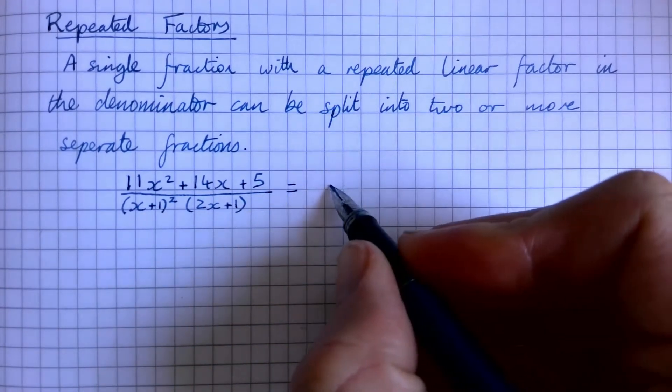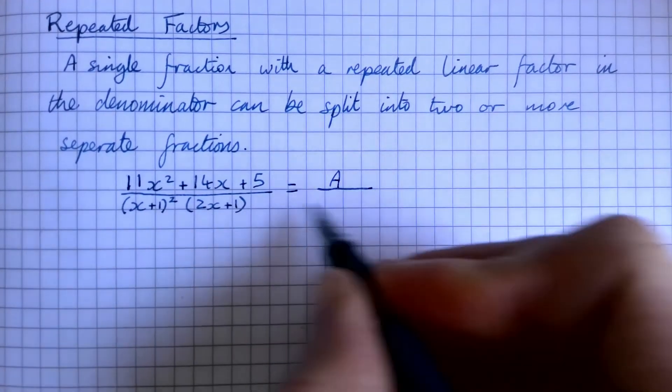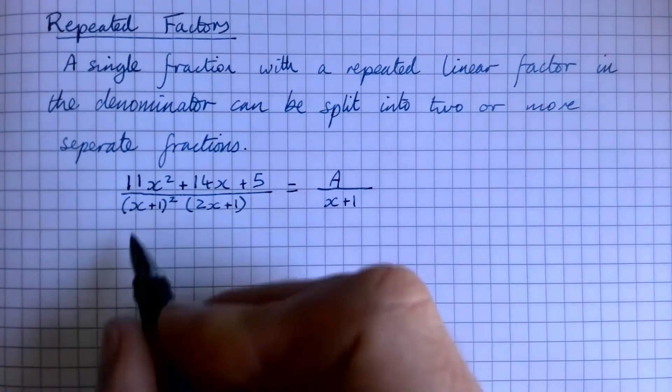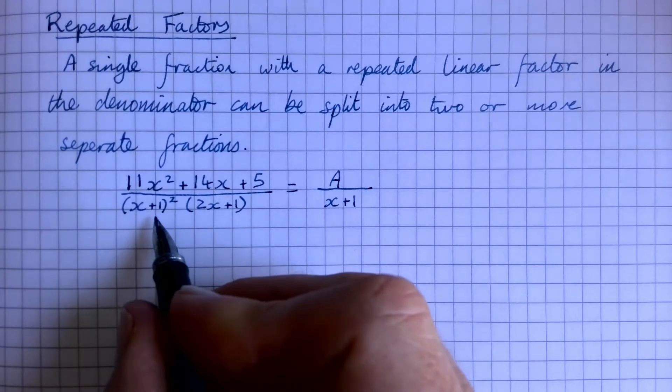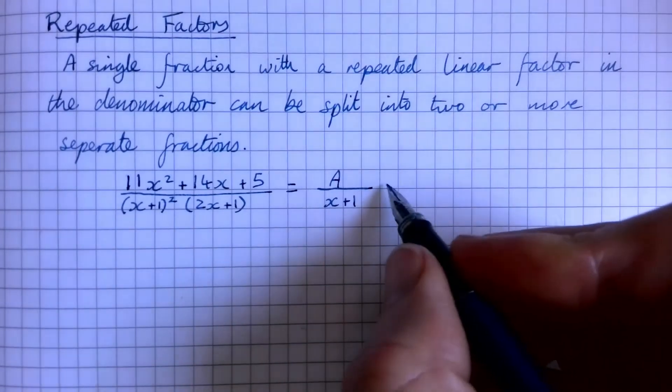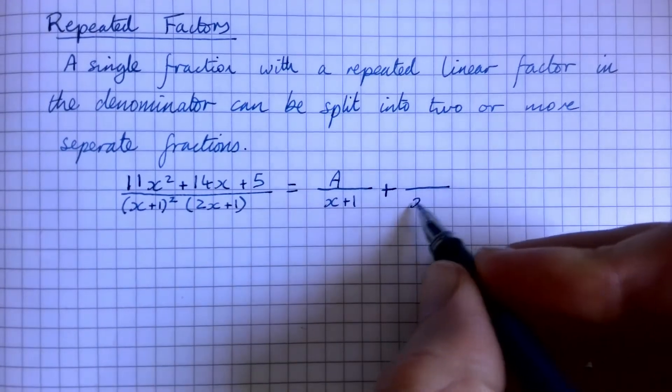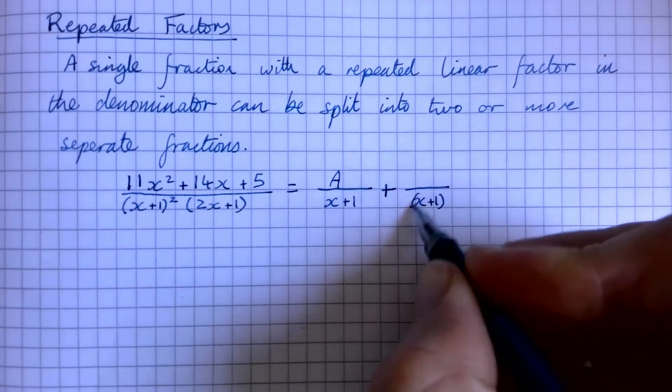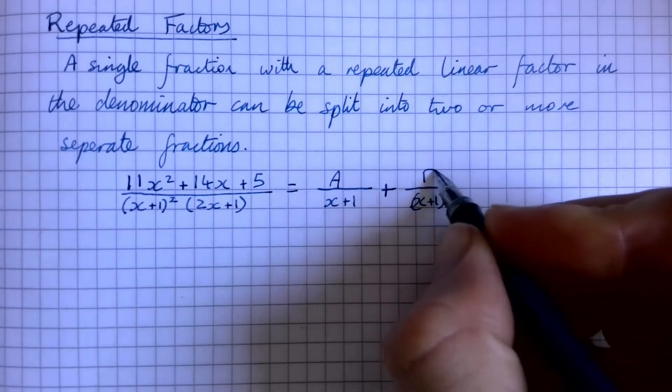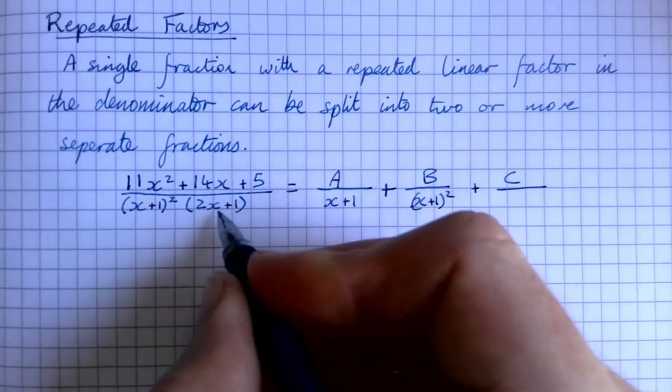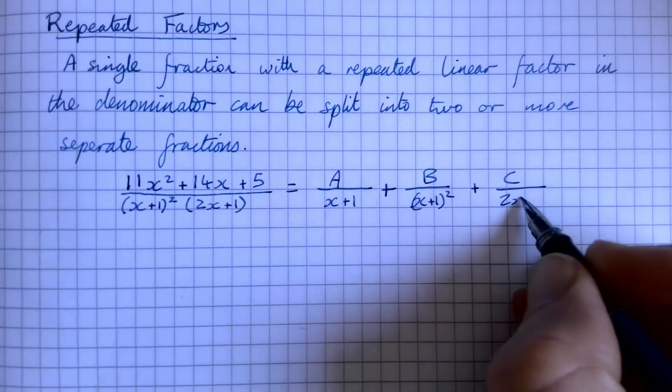What that means is we can say that we're going to have not two but three parts here. We'll have x plus one as one factor, but say that number there was three, three squared would be nine. So the square of x plus one is going to be our next denominator, and then the third one will be the other bracket, two x plus one.